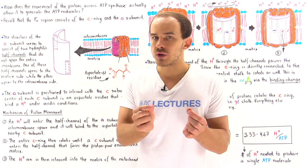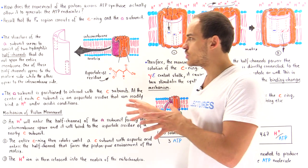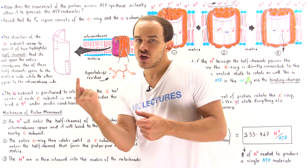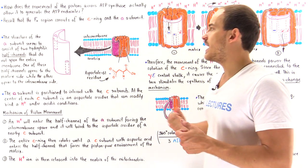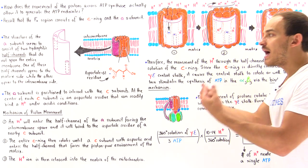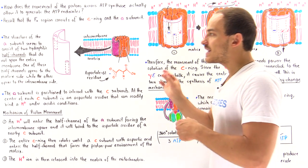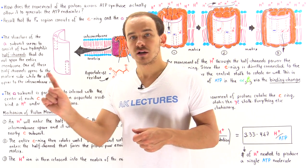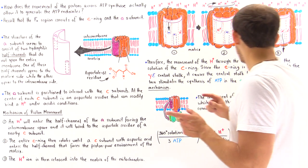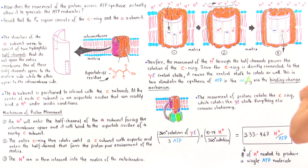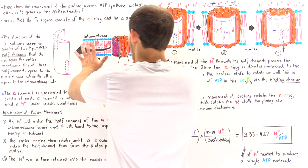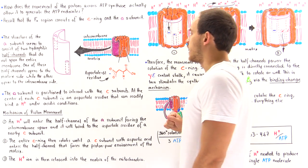It's the C ring that actually rotates within the ATP synthase, and that allows the gamma-epsilon stalk to rotate and cause the binding change mechanism that we discussed in the previous lecture. Let's focus on the following diagram.